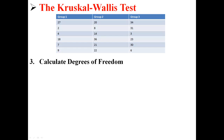Next, we're going to calculate our degrees of freedom. Degrees of freedom are equal to K minus 1, where K is the number of groups you have. So in this case, our degrees of freedom is equal to 3 minus 1, or 2.